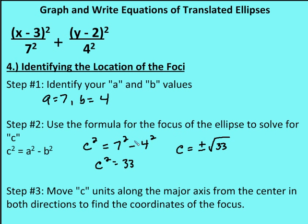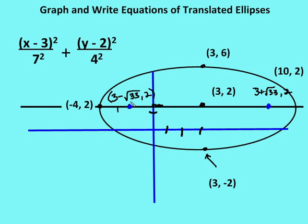When solving these problems, the text often gives you the c and a values, or the b and a values, and you derive the remaining one. The c value is not stated in the equation, so you must derive it using c squared equals a squared minus b squared. Here, a is the distance from the center to the vertices, b is the distance to the co-vertices, and c is the distance to each focus. The foci are at (3 minus root 33, 2) and (3 plus root 33, 2).